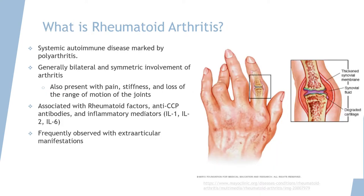Rheumatoid arthritis is a systemic autoimmune disease characterized by polyarthritis. It is generally bilateral and symmetric. Usually, the joints present with pain, stiffness, difficulty moving them, and loss of the range of motion.